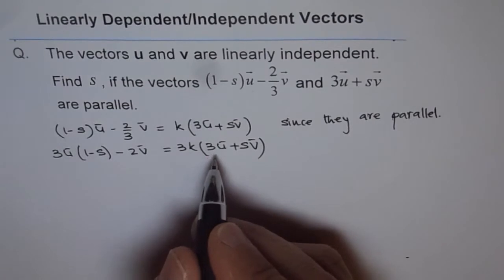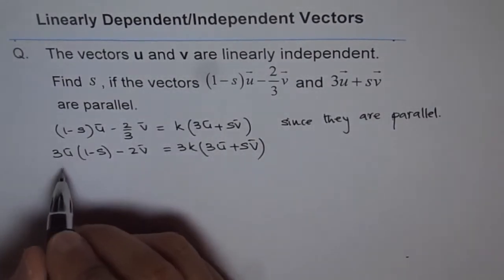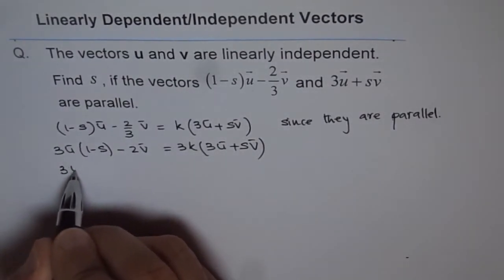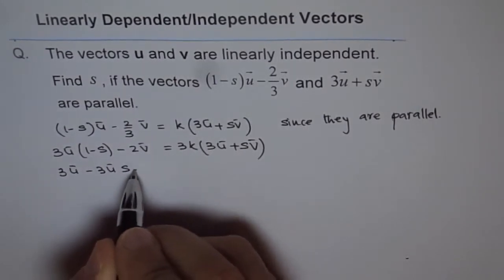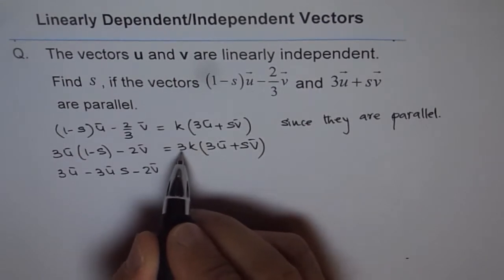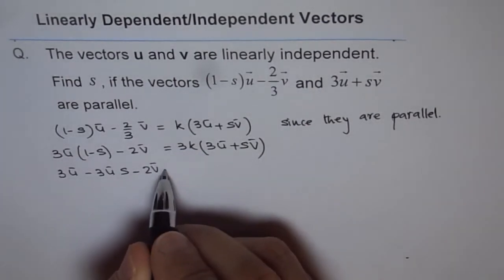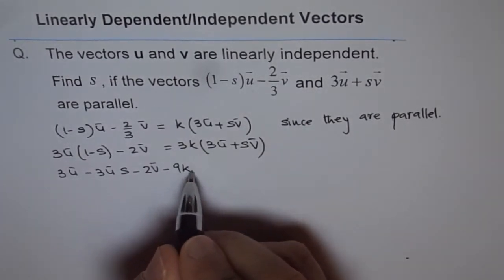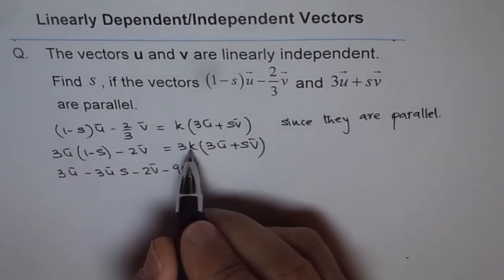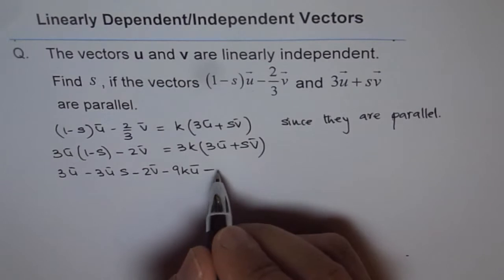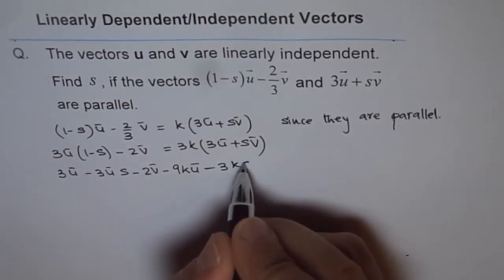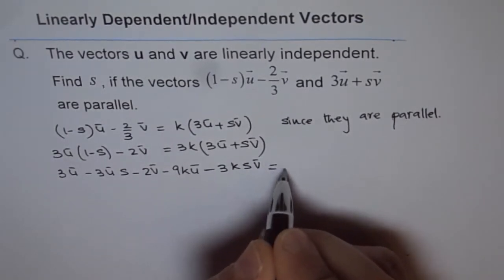And now, we can bring all the terms together on the left side. So, we get 3u - 3us - 2v. And when we open 3 times 3 times 3 is 9, so minus 9ku. And here it is 3ks, which will become minus when you bring it on the left side. So, minus 3ksv equals to 0.